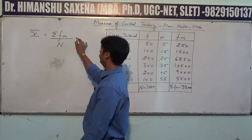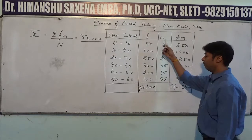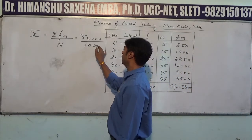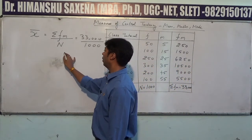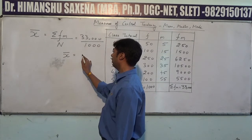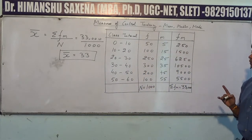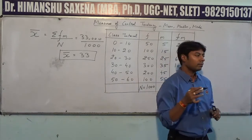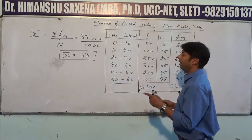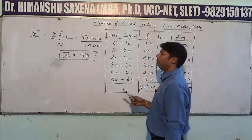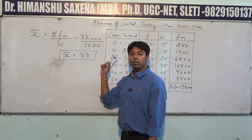We have the value of summation fm, which is 33000, divided by n. n was the total frequency in this continuous class interval. So x-bar, or arithmetic mean, equals 33000 divided by 1000, which equals 33. So x-bar is equal to 33.